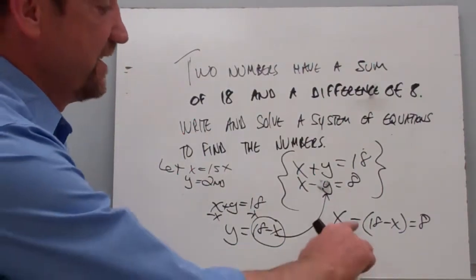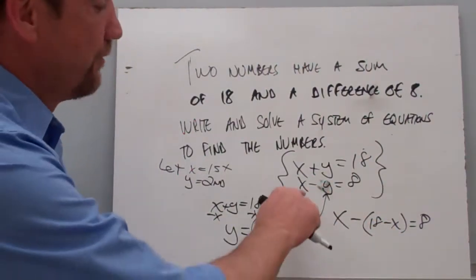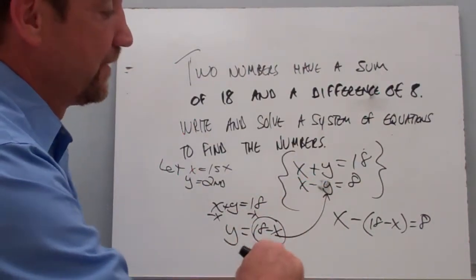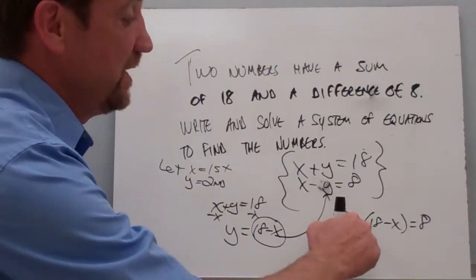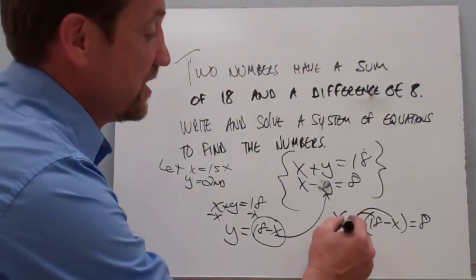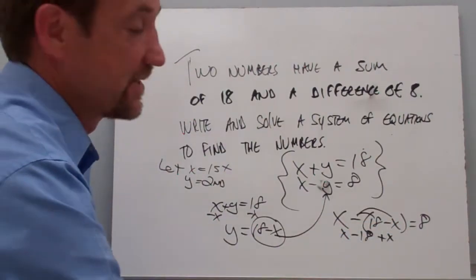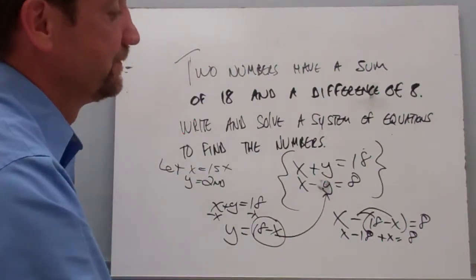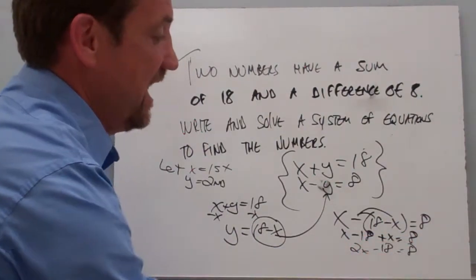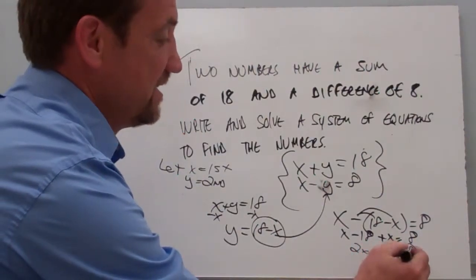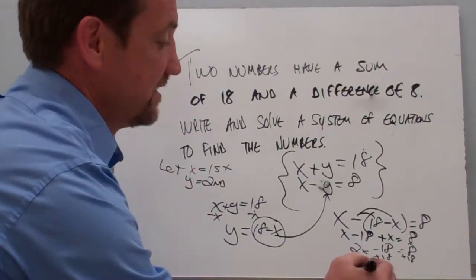Now this is one where you want to be careful because of this minus sign here. Remember we substituted 18 minus x for this y, and our original equation said x minus y. So we need to distribute that negative sign. This becomes x minus 18, and negative times negative gives you a positive x, equals 8. When you combine like terms, x plus x gives you 2x minus 18 equals 8. We're going to add 18 to both sides — 2x is 26. Divide by 2, and x is going to be 13.